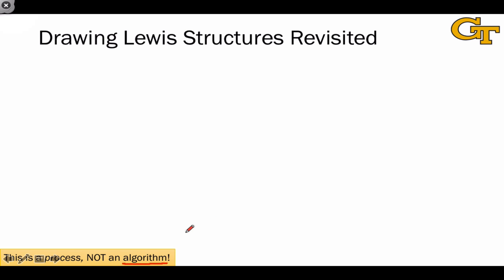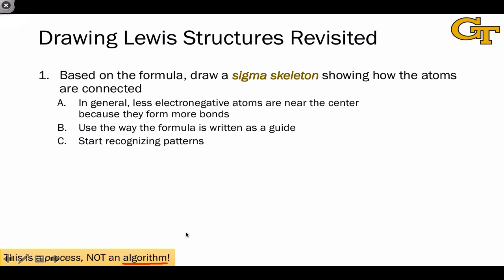This is more of a process. It's an error-prone sequence of steps that we take to convert a formula into a Lewis structure. Where the error generally tends to lie is in the first step.